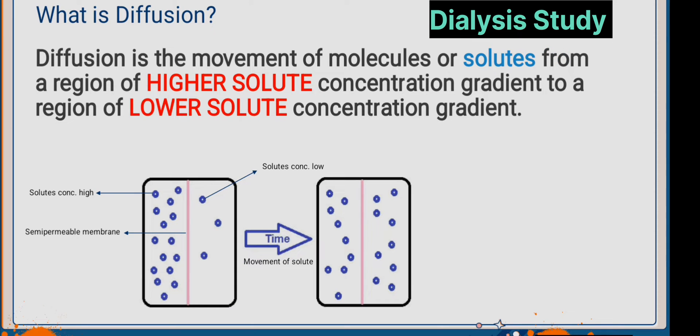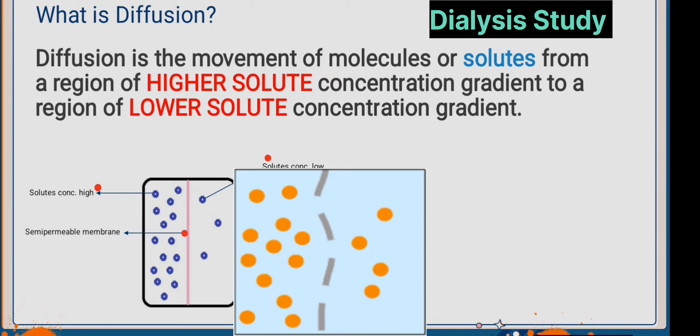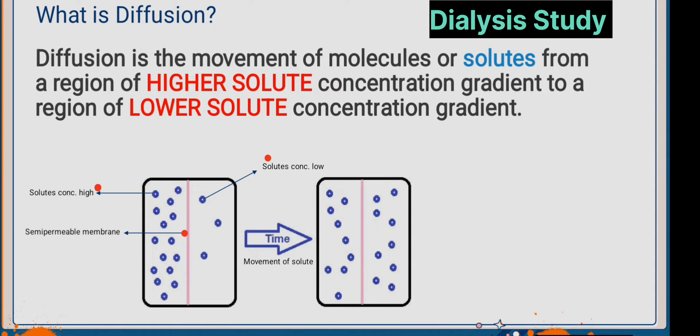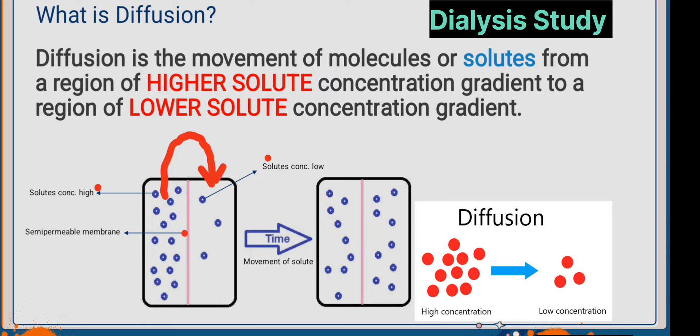In this diagram you can see the solute concentration is high on this side and low on this side, and this is the semi-permeable membrane. Both solutes are separated by the semi-permeable membrane. After time, solutes will move from the higher solute concentration region to the lower solute concentration region, and eventually both sides will become equal.